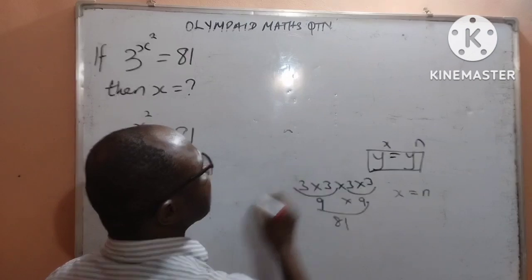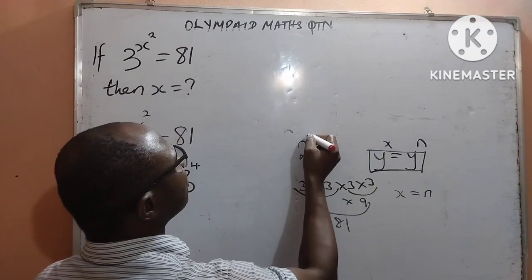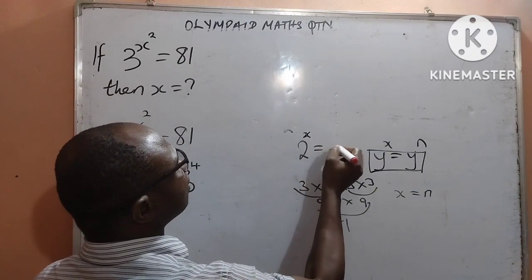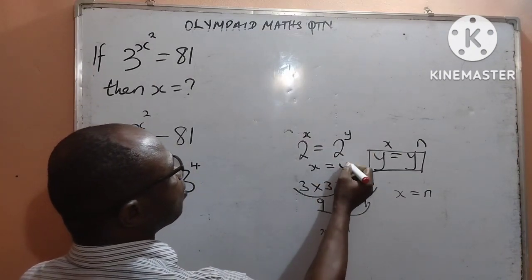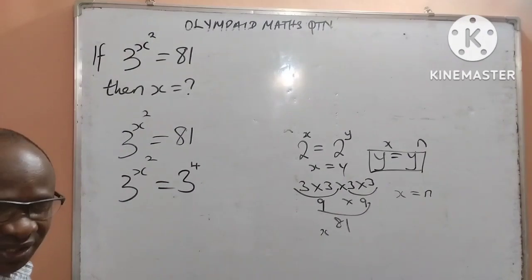That means if I have 2 to the power of x equal to 2 to the power of y, it means that x is equal to y. It is a law of indices.